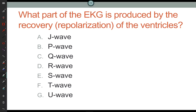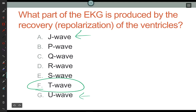What part of the EKG is produced by the recovery or repolarization of the ventricles? That's the T wave. There are also J waves and U waves not taught in EMT class. By looking at the electrical signals — the voltage differences — we can track how charge is moving through the heart. Physicists have spent a lot of time modeling the heart as a 3D instrument and modeling how electricity flows through it.